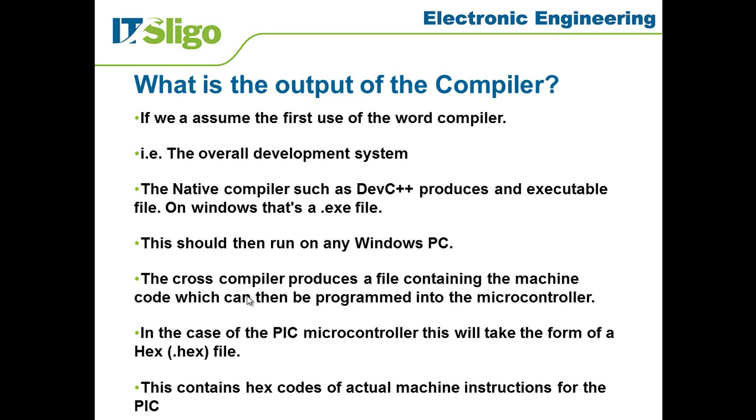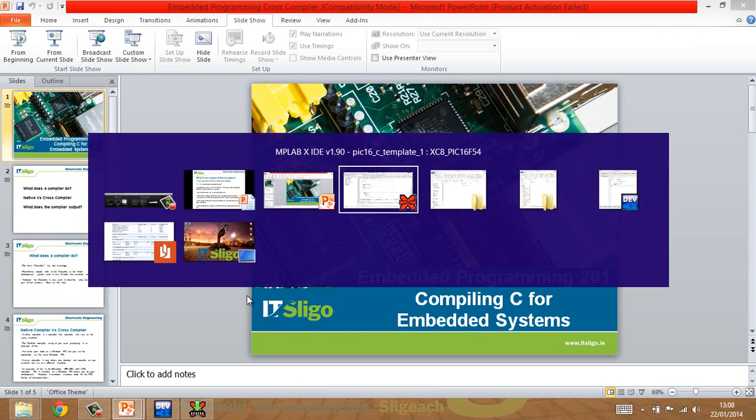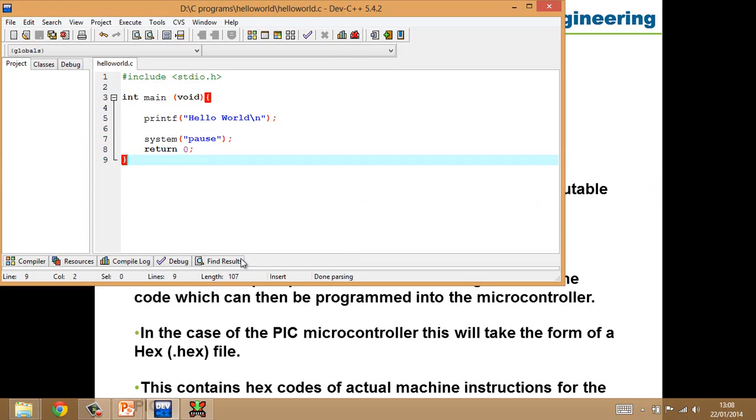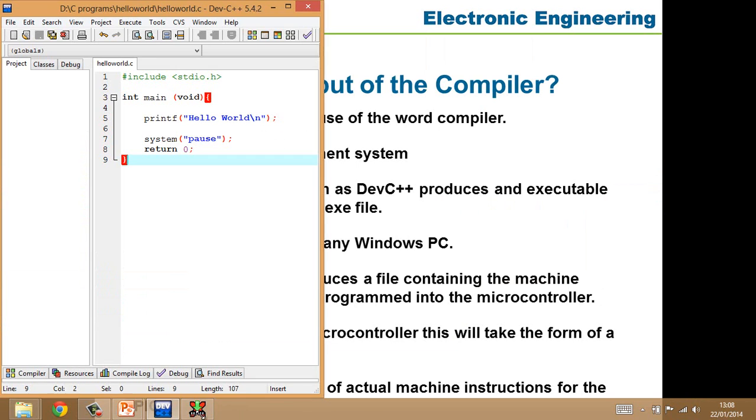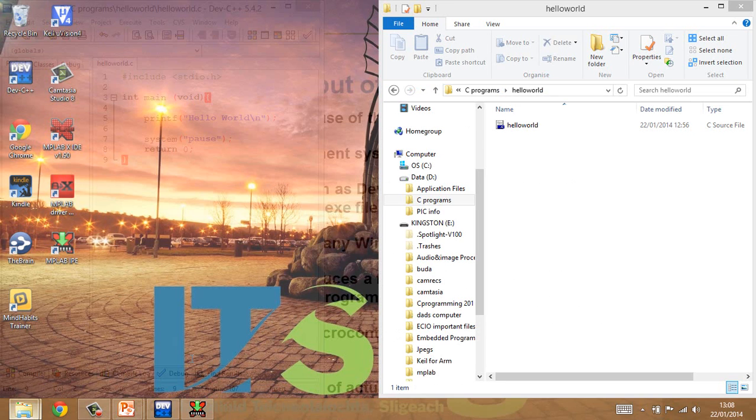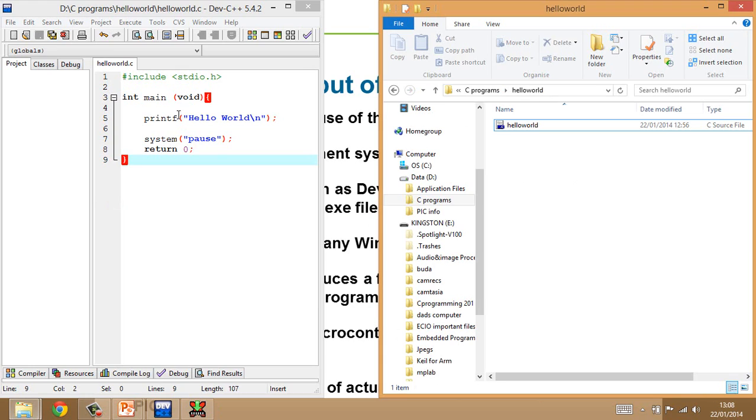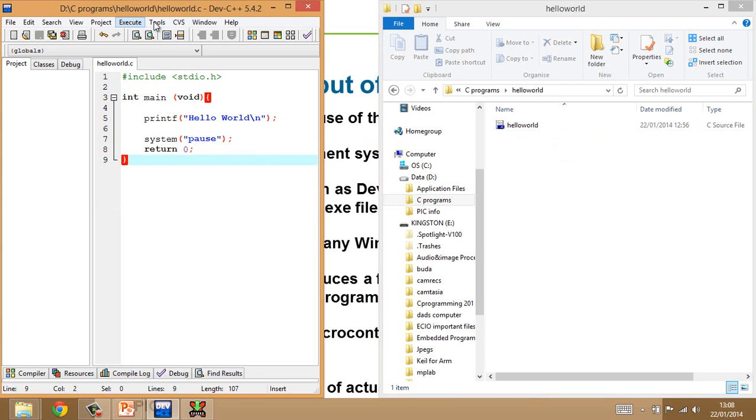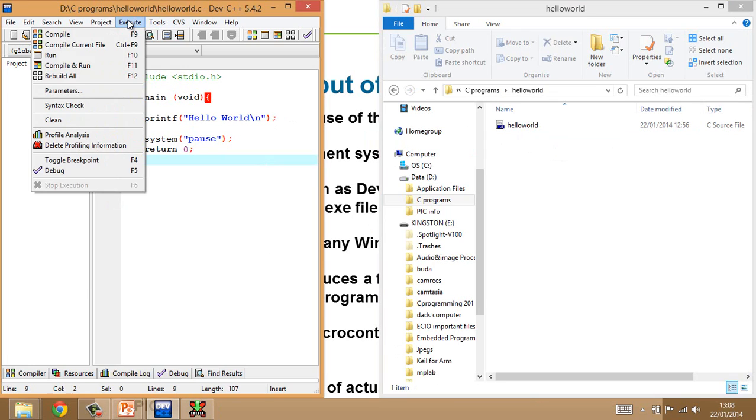On Windows that would be a .exe file. This should then run on any Windows PC. So just very quickly, I'm going to swap over to my DevC++ compiler here. I have a simple Hello World program as you can see there, and you can see in the directory where that Hello World program is actually sitting. Now what I'm going to do, rather than the standard compile and run which is what we always did previously, I'm just going to do a compile.